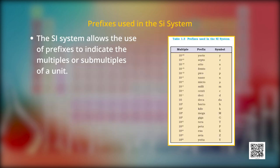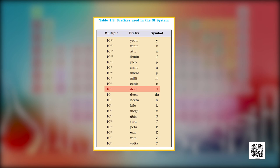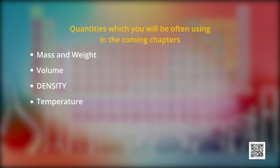The SI system allows the use of prefixes to indicate the multiples or submultiples of a unit. Now, please see the table. Deci is used for 10 raised to the power of minus 1. Centi is used for 10 raised to the power of minus 2. Milli is used for 10 raised to the power of minus 3. In the same manner, micro for 10 raised to the power of minus 6 and nano for 10 raised to the power of minus 9. Let us now quickly go through some of the quantities which we are going to use in the coming chapters.